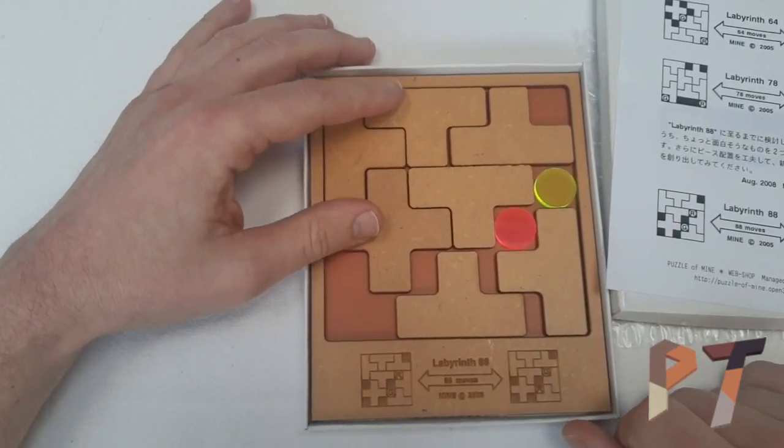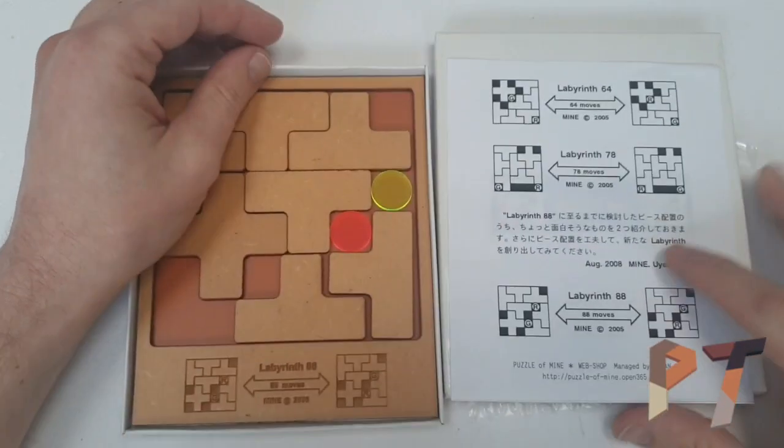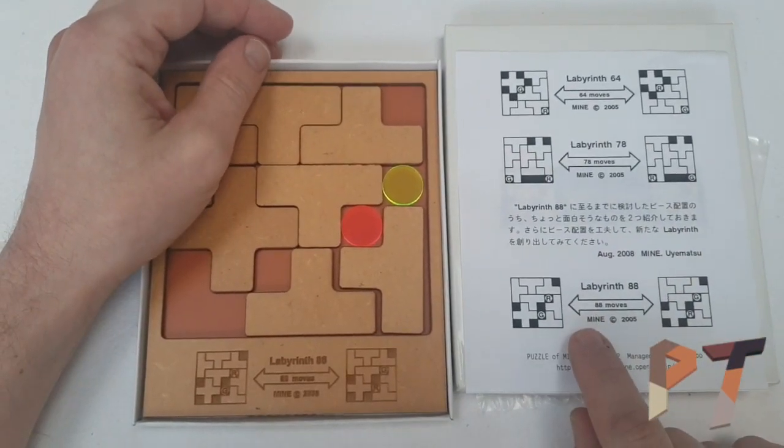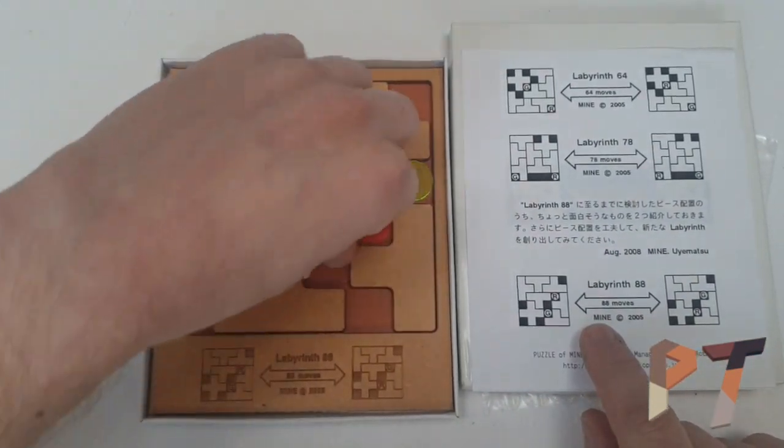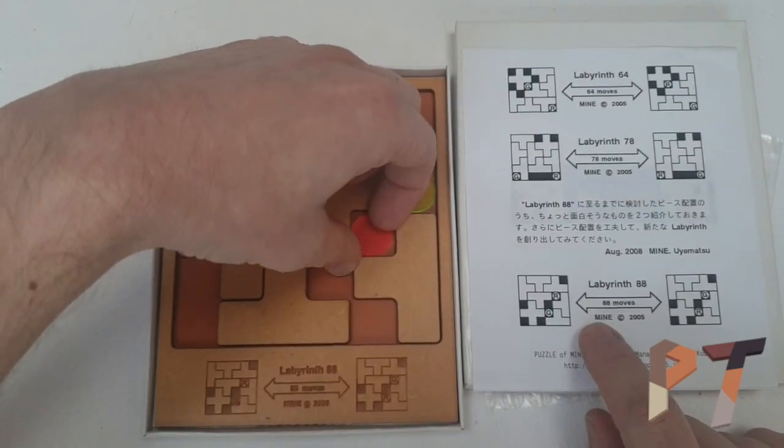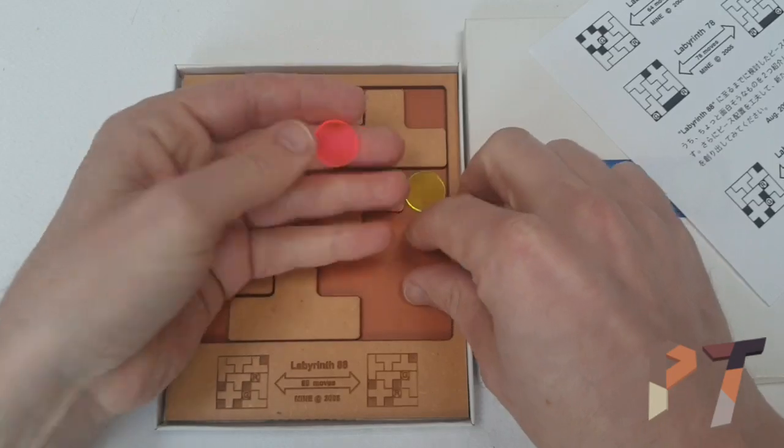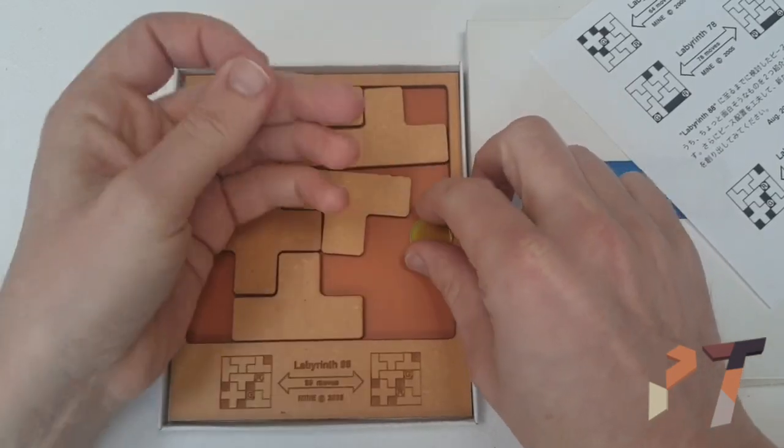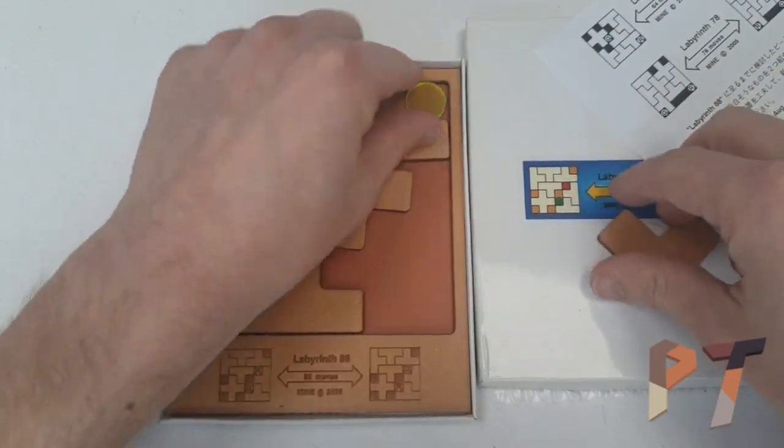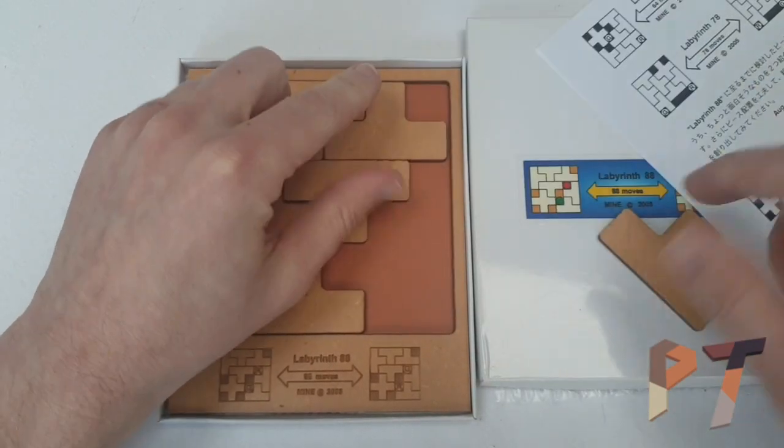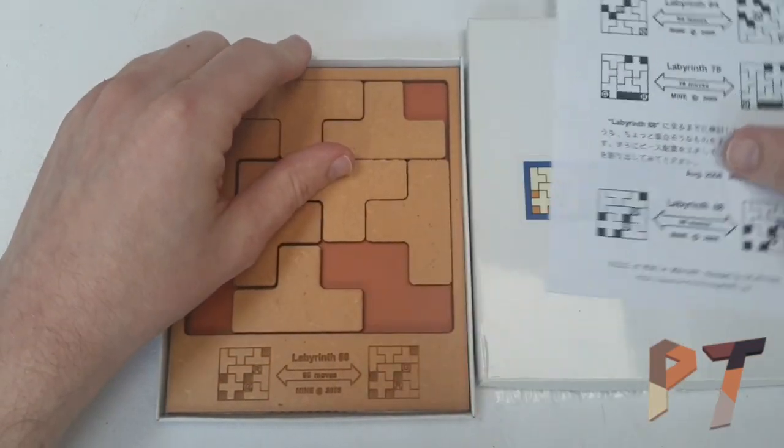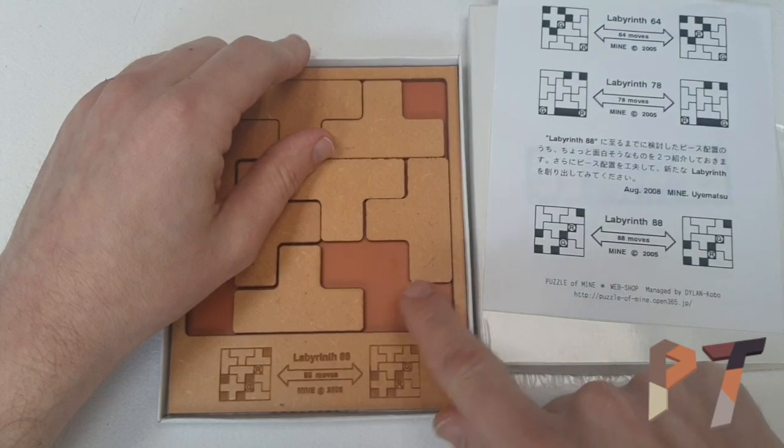We're set up here in this 88 move position and we have two discs. Let's get those two discs out. We have a red disc, actually really pink, and a green disc which is kind of a luminous green. Let's just make sure I've got the orientation of all the pieces correct.